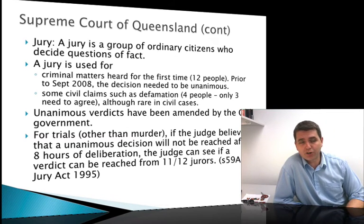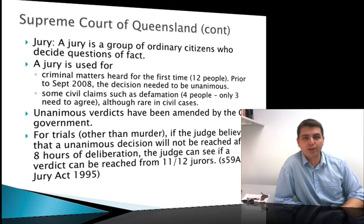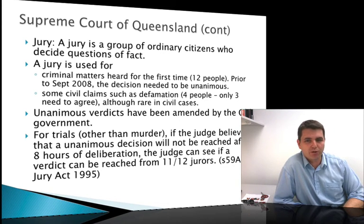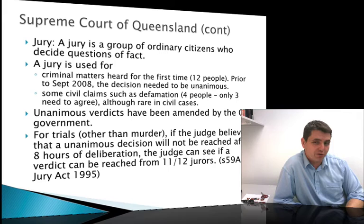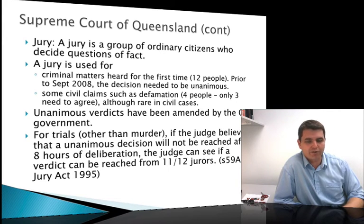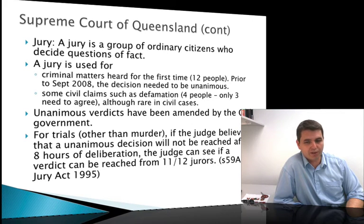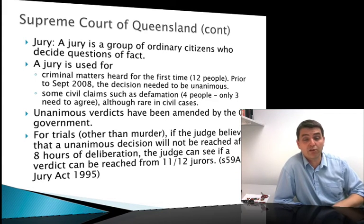Juries should be a group of ordinary citizens — 12 people — and are generally used for criminal matters. Prior to 2008, you needed a unanimous decision, but that's no longer the case in Queensland. For trials for anything other than murder, if the judge thinks you're not going to get a unanimous decision after eight hours, they can seek a decision from 11 out of the 12 jurors. That's Section 59A of the Jury Act — you don't need unanimous juries in Queensland anymore under that section.